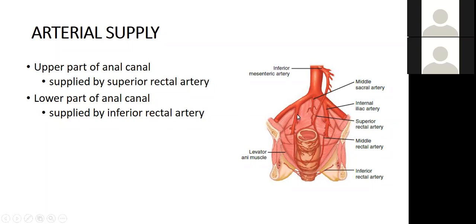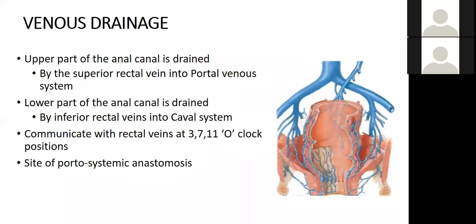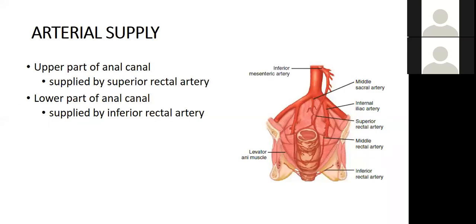The arterial supply of the anal canal: the upper part is supplied by the superior rectal artery, a continuation of the inferior mesenteric artery. The lower part is supplied by the inferior rectal artery, a branch of the internal pudendal artery. There is also a middle rectal artery that contributes some supply in between.